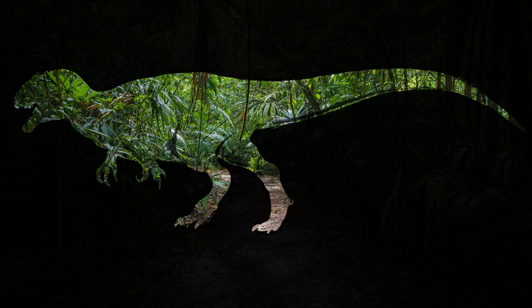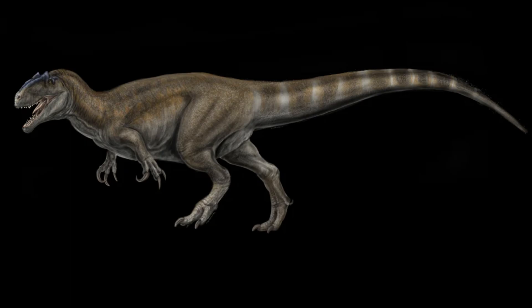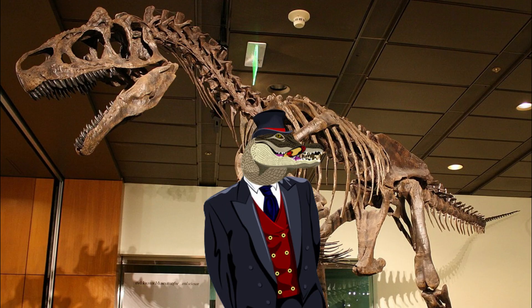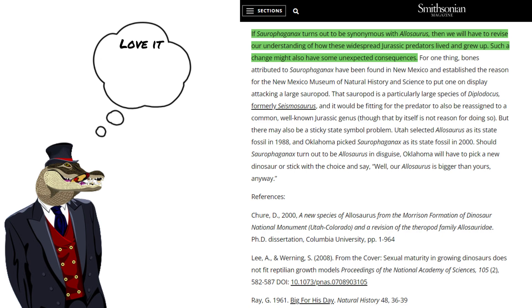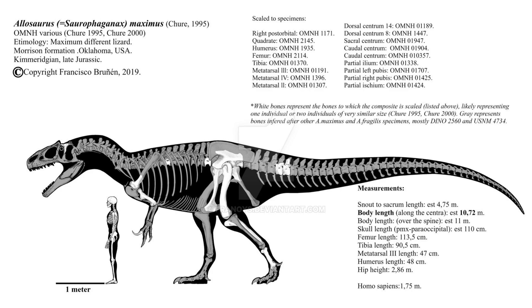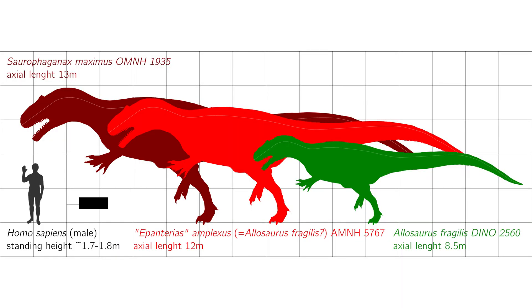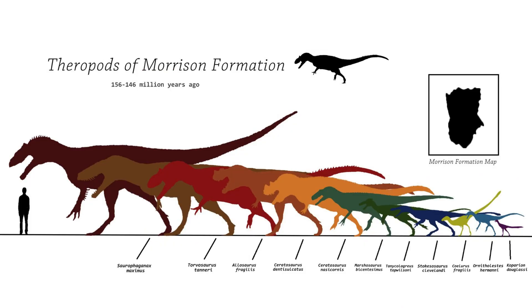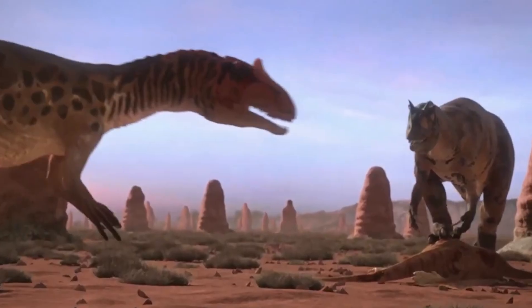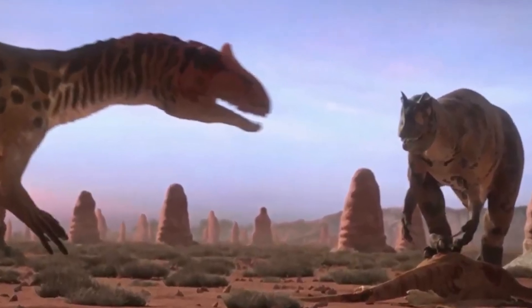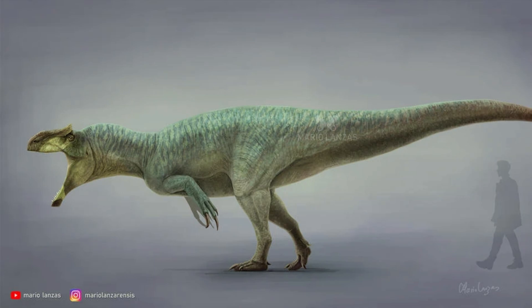The last significant competitor was the Saurophagonax. This theropod is a unique case — there is an ongoing debate whether it is its own genus or directly part of the Allosaurus genus. At one point it was given the name Allosaurus maximus, showing how certain paleontologists were that it belonged to the Allosaurus genus. If we take it as its own genus, I would put it as the apex predator of the region. It was simply much larger than Allosaurus, Torvosaurus, and Ceratosaurus, and I think Saurophagonax could have been one of the most successful predators during the late Jurassic.